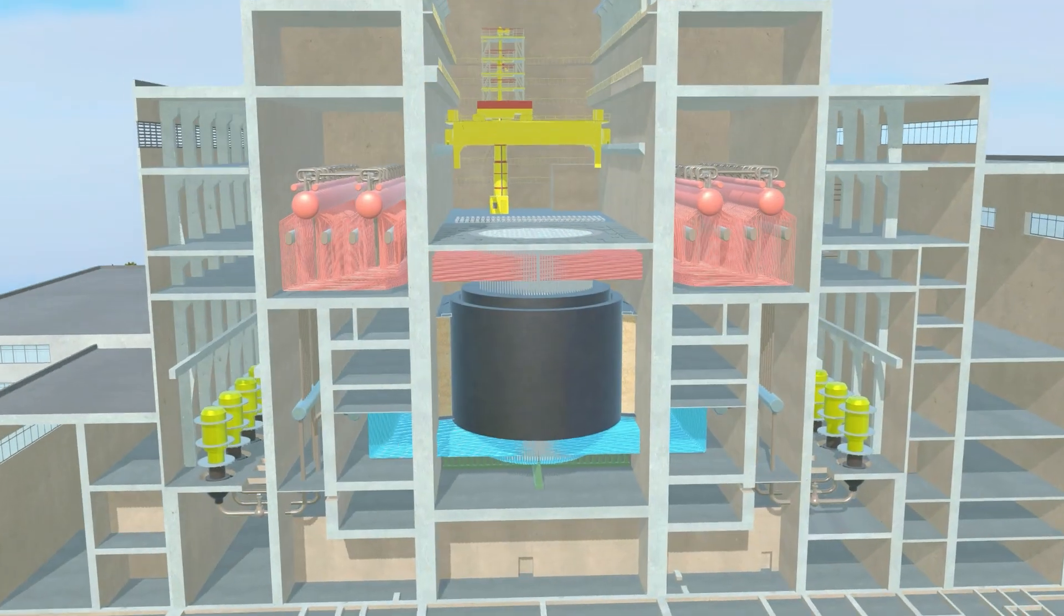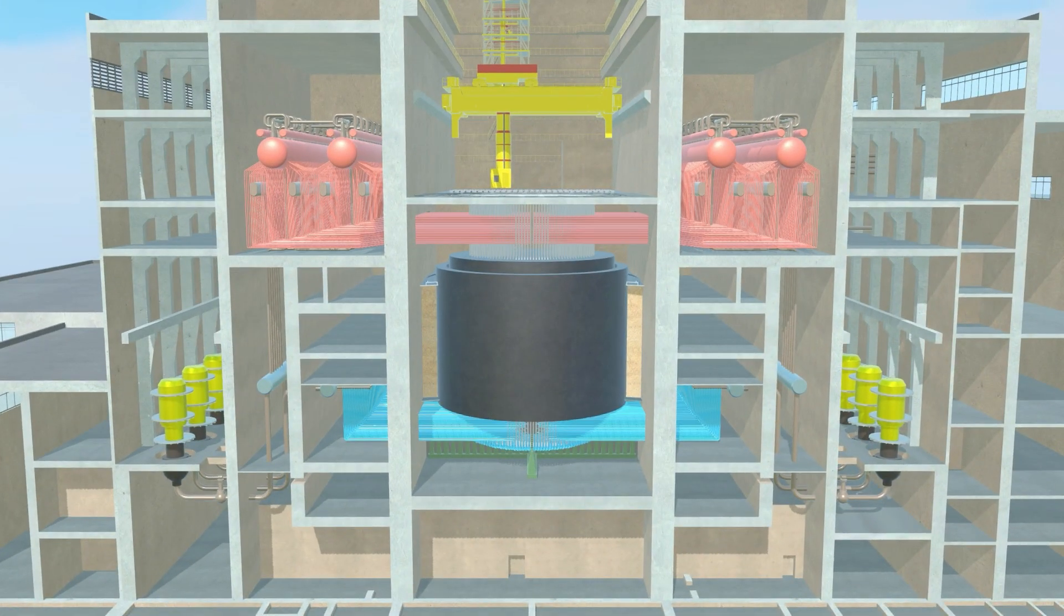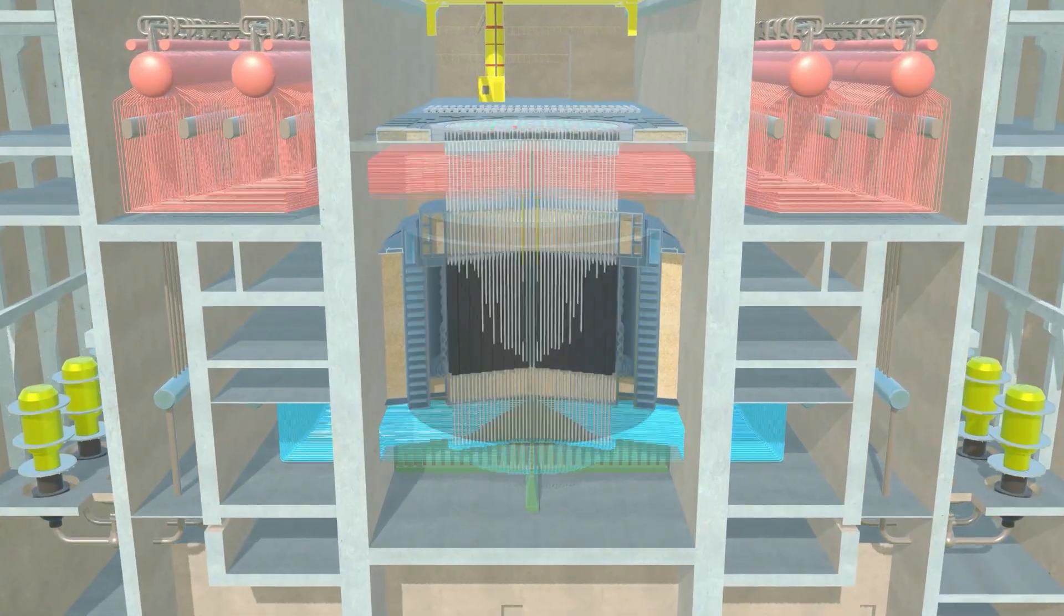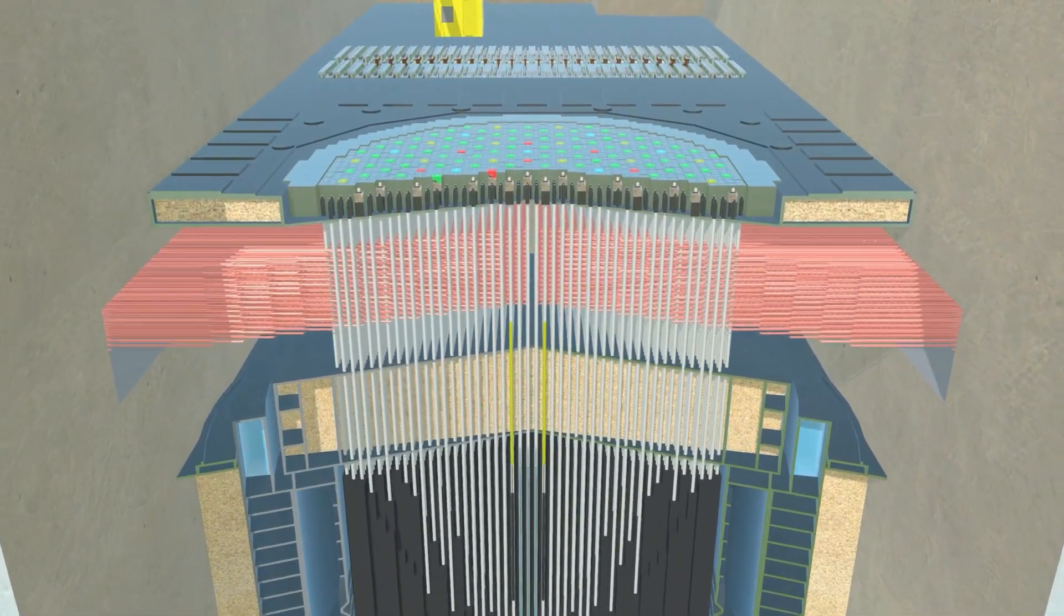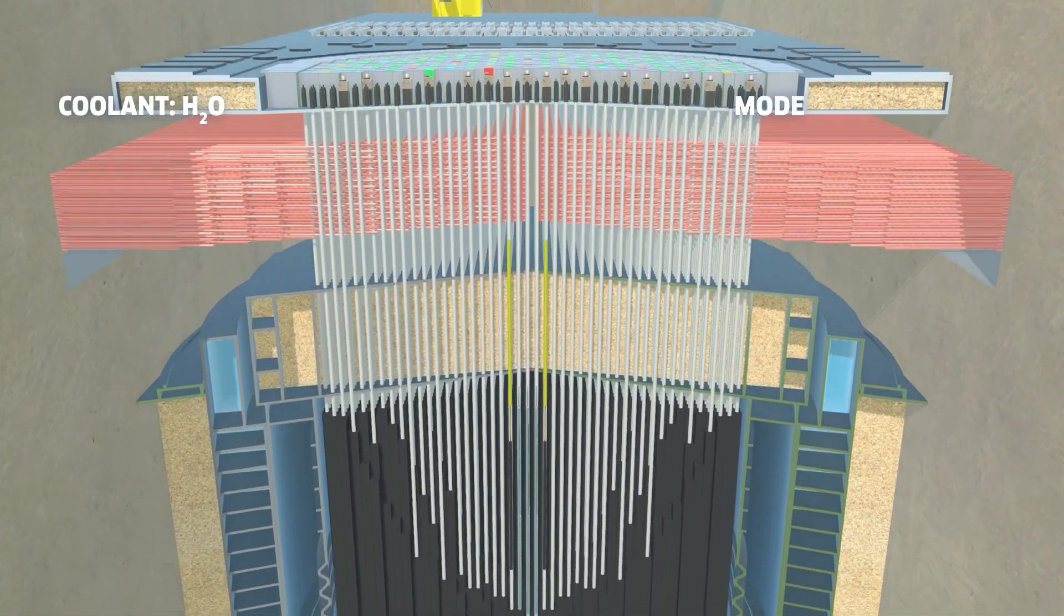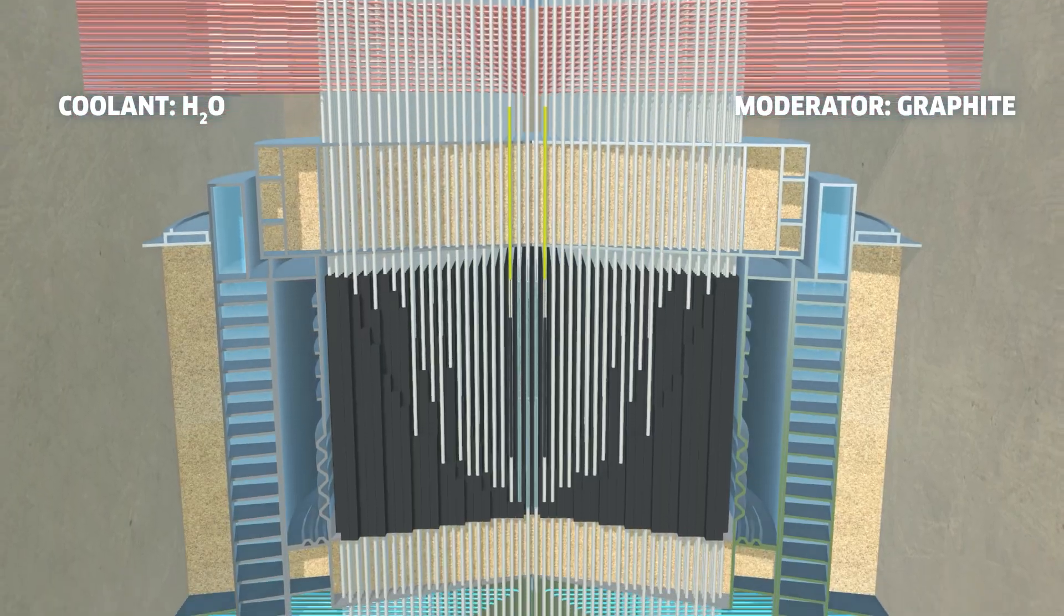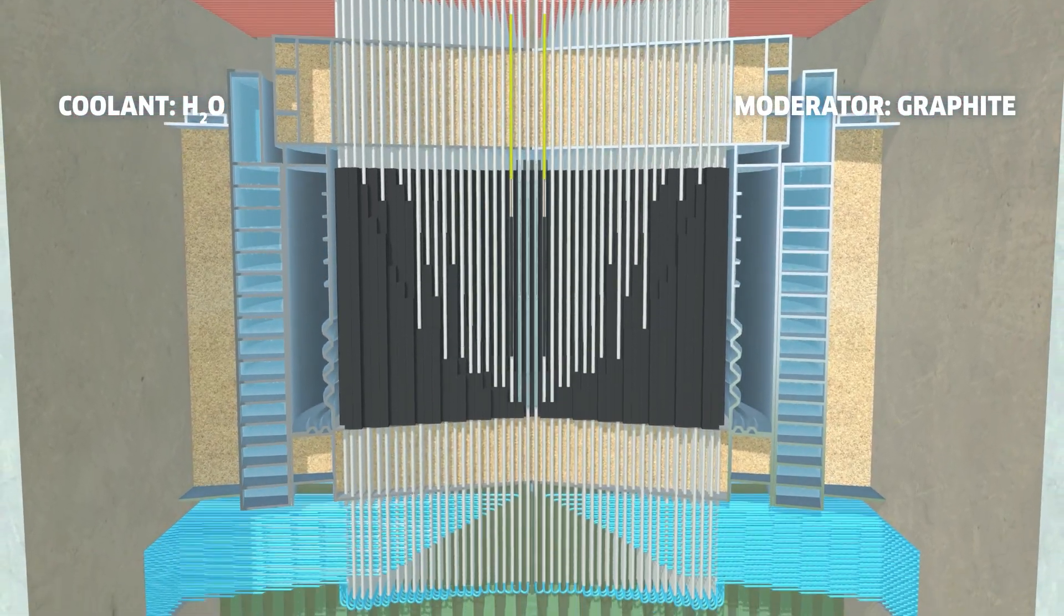RBMK is the Soviet alternative to the LWGR, Light Water Cooled Graphite Moderated Reactor. It is a water-cooled and graphite-moderated boiling water reactor without a pressure vessel and without containment.